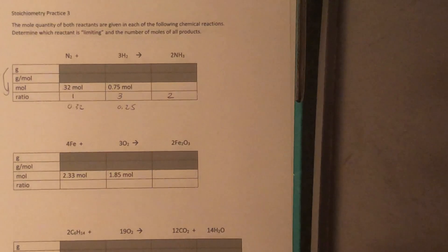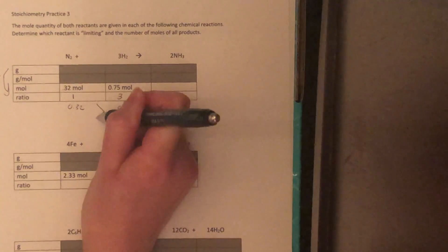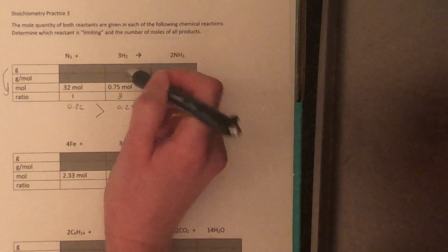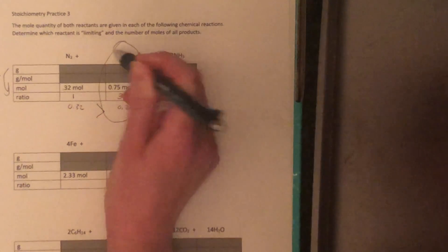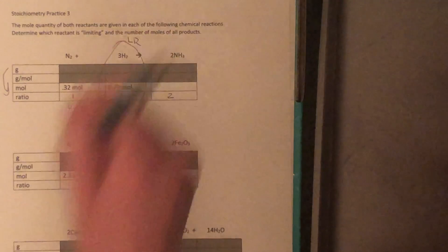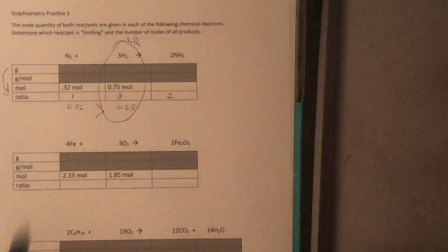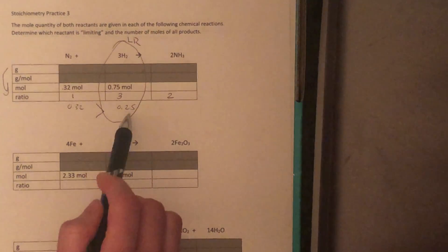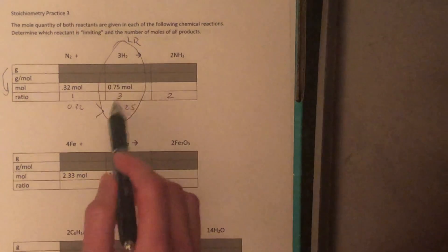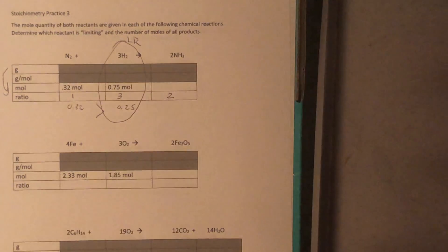So which one is smaller? 0.25 is smaller than 0.32. So that means that our hydrogen is our limiting reactant. We are going to run out of hydrogen before we run out of nitrogen. So our smaller number is our limiting reactant.